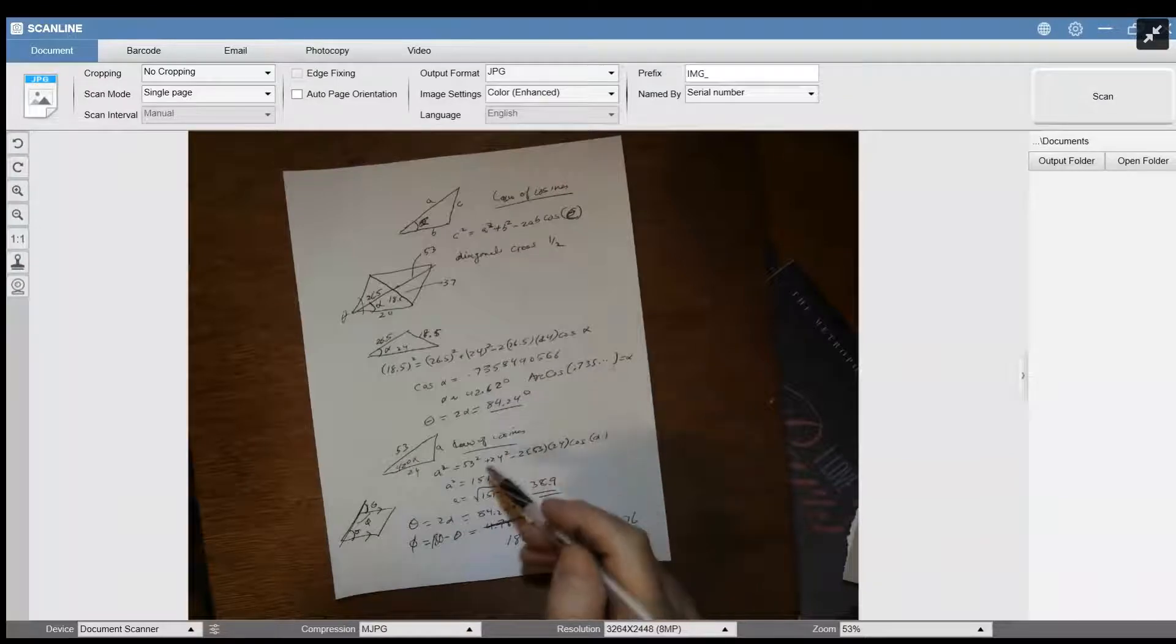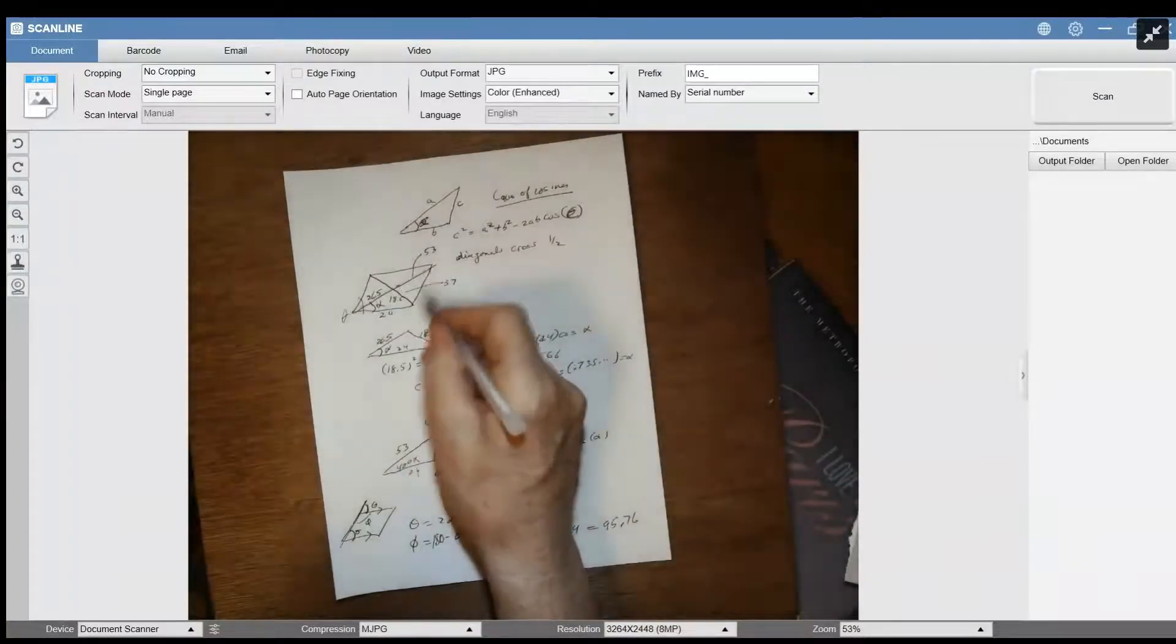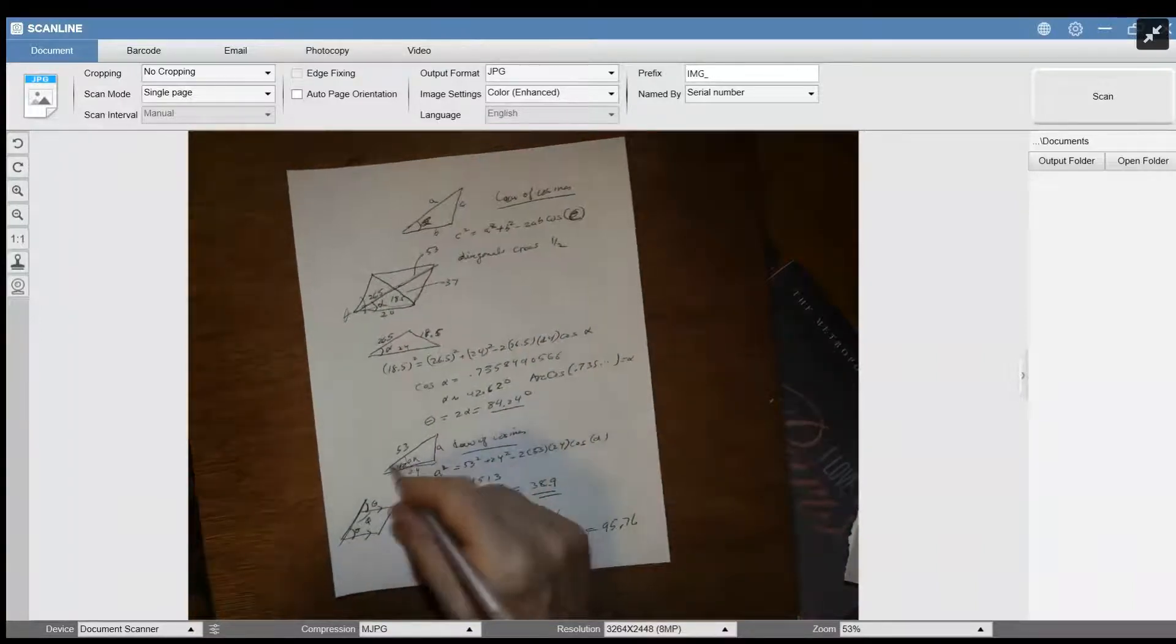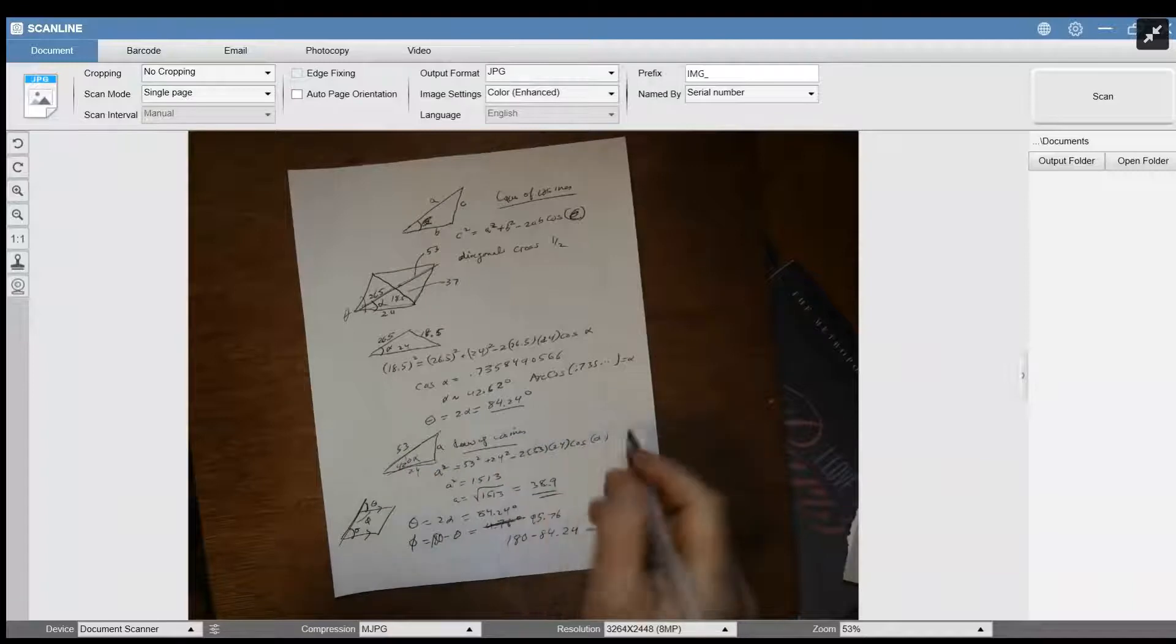And now you want to find out what a is. If you look at this whole triangle here, you've got 24 at the base, you've got the angle, and you can use the law of cosines.